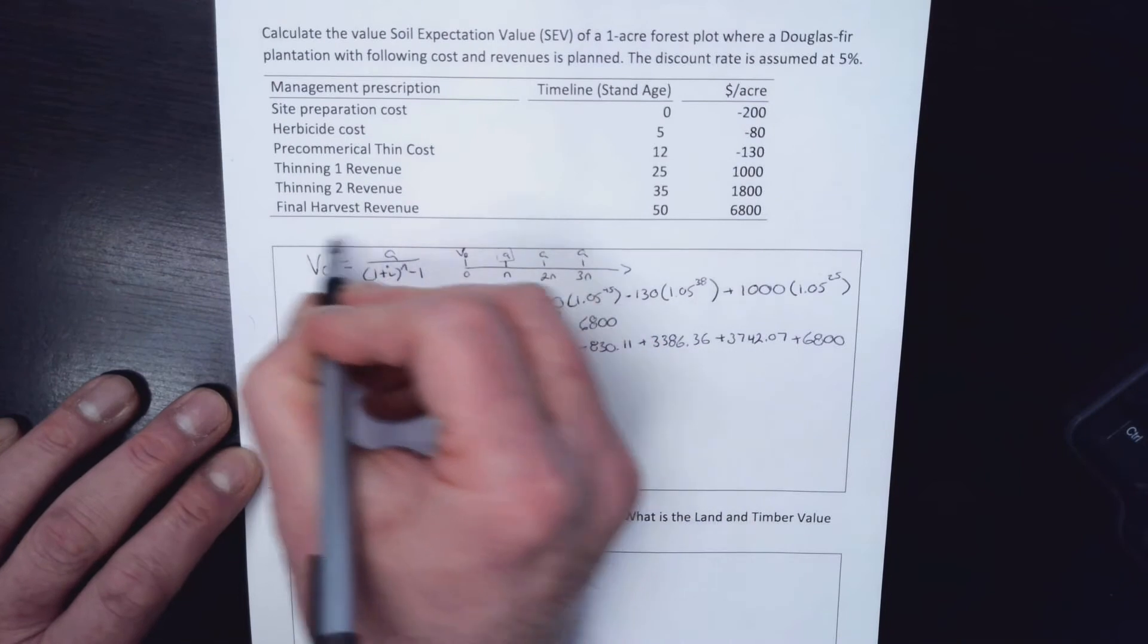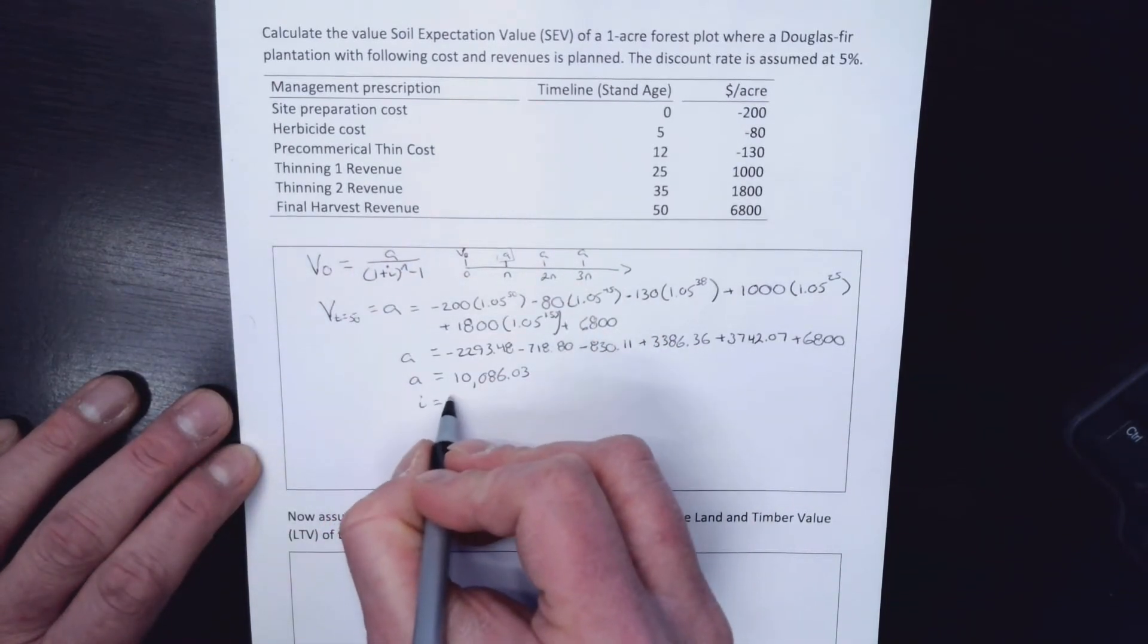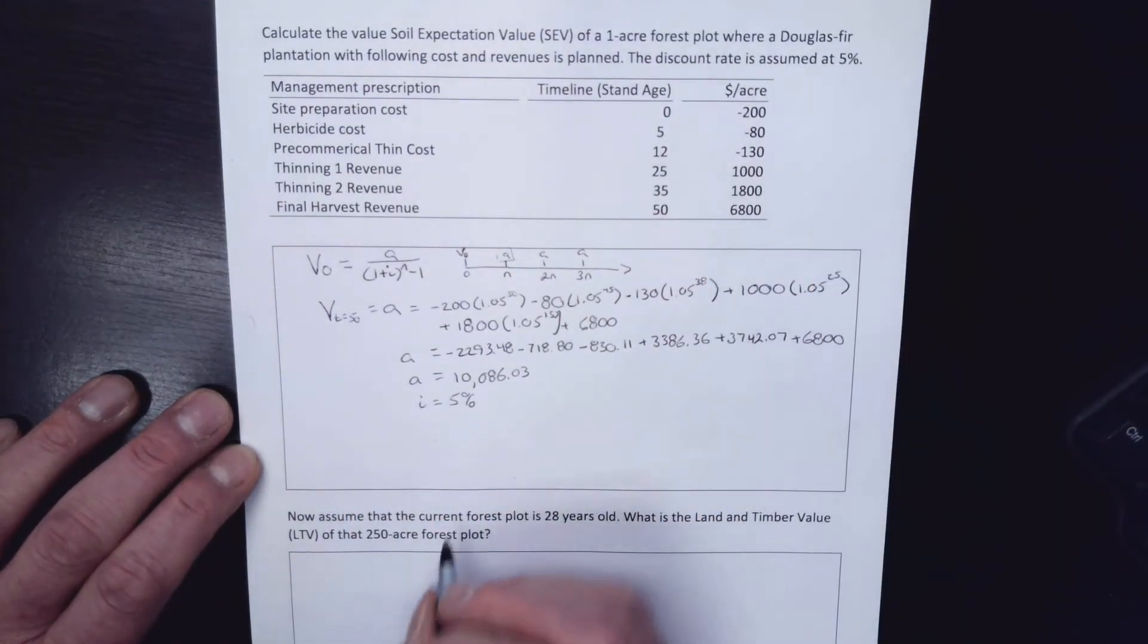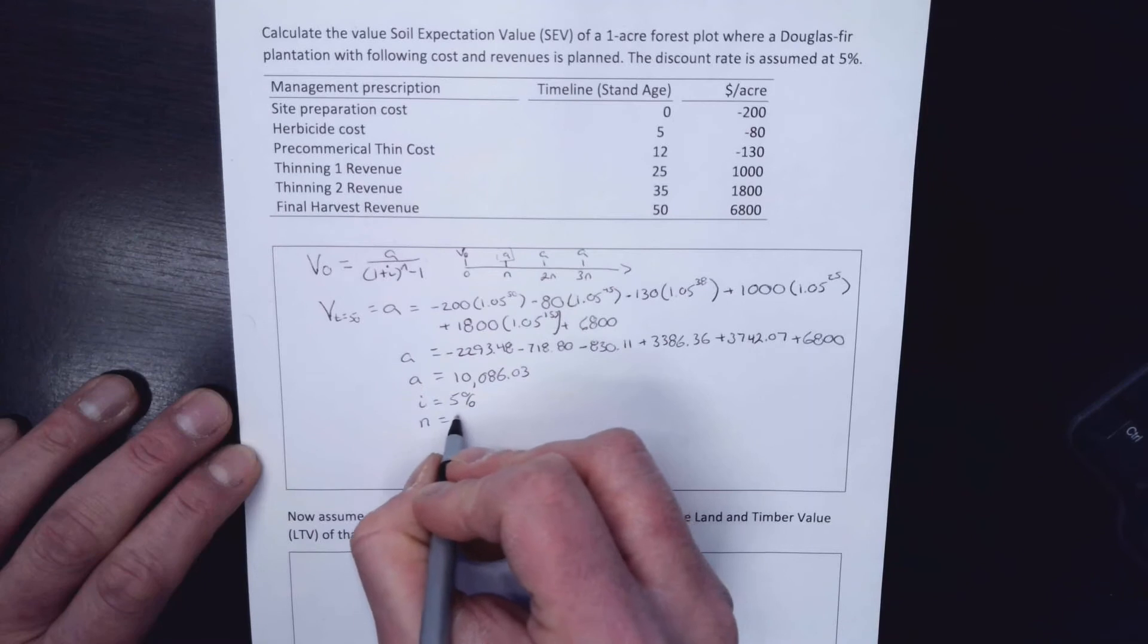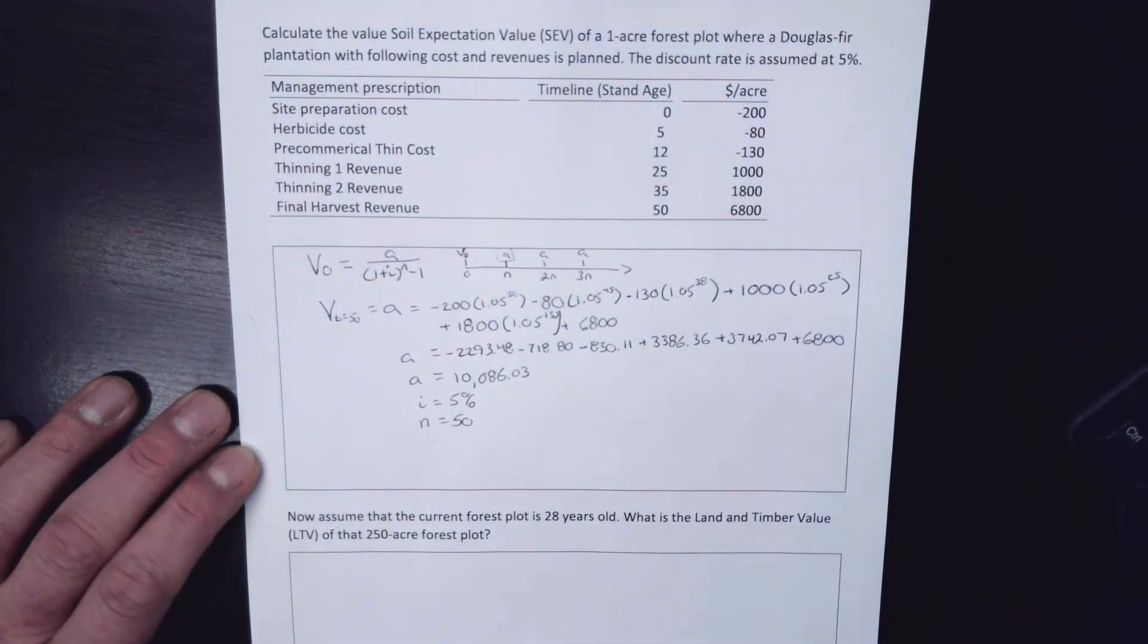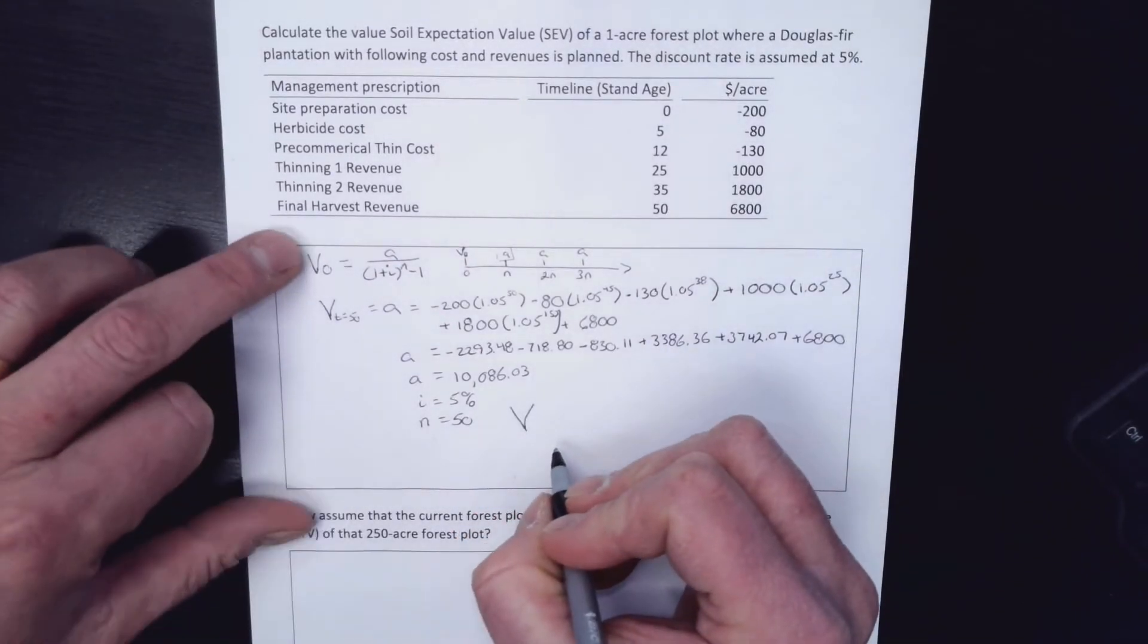Okay. So now if I look at this equation here, I know what my A is. My I is 5%. That's from just up here in the example. And my N is 50. That's the cycle over which this management is being repeated.